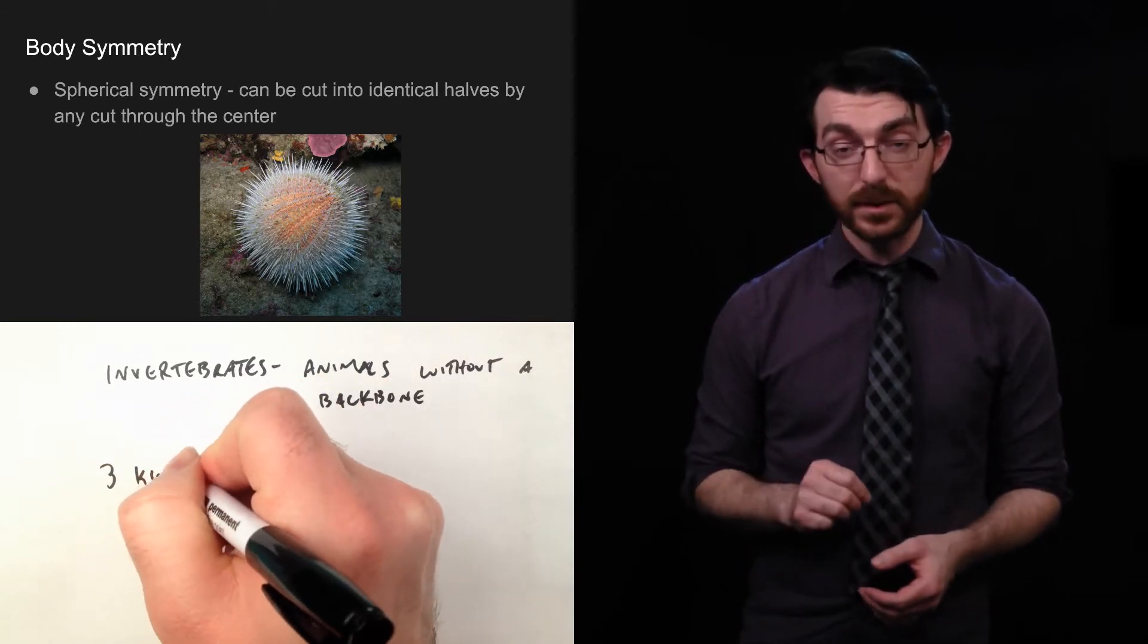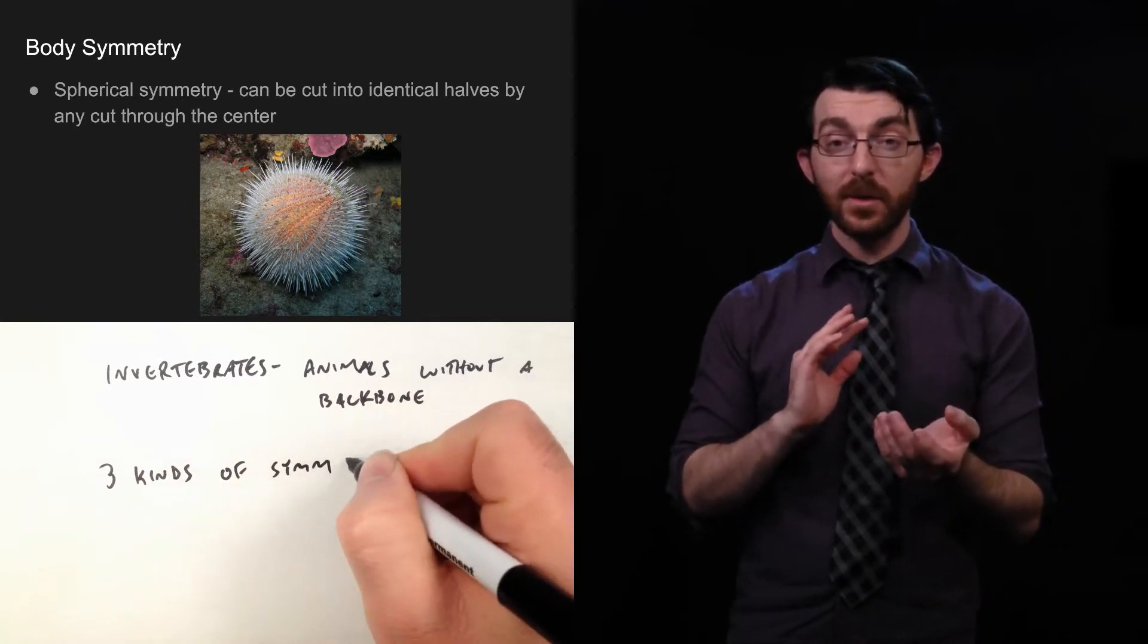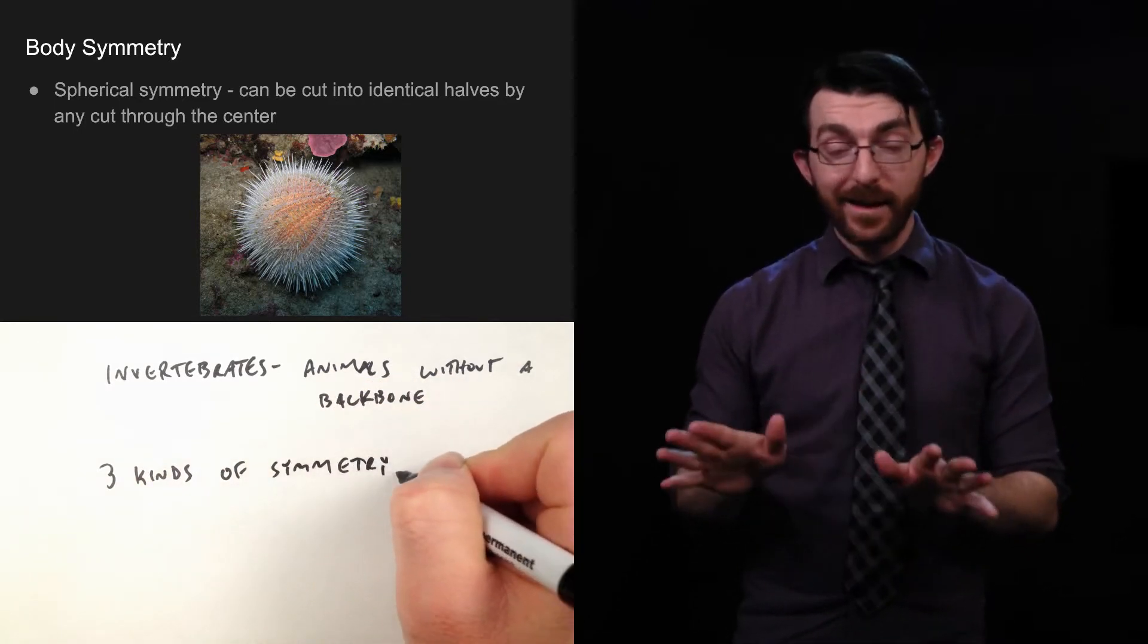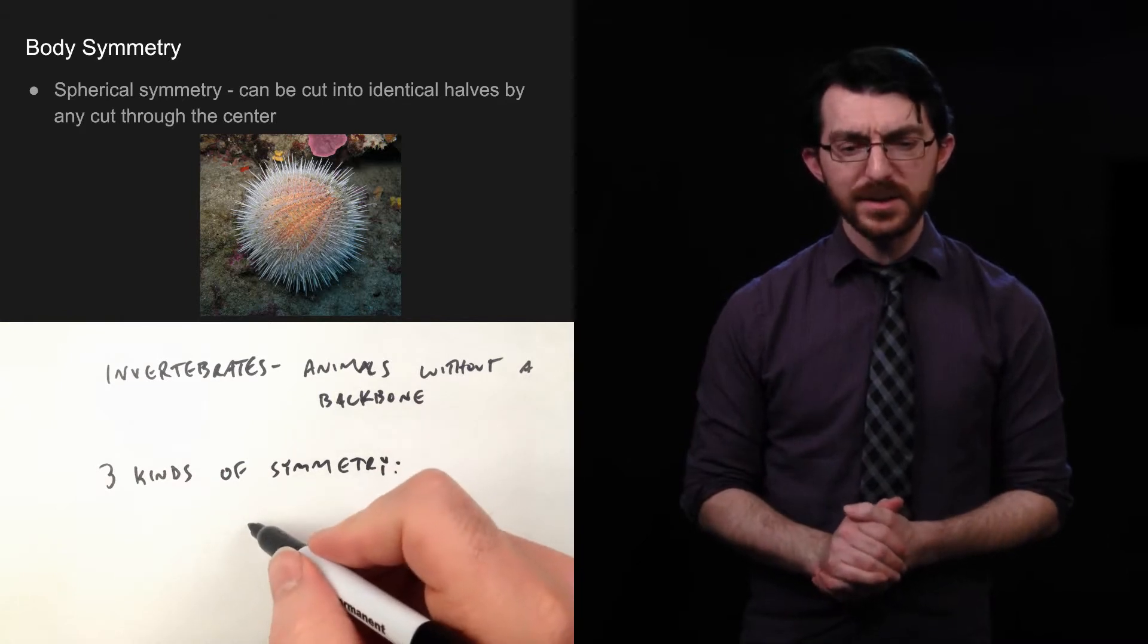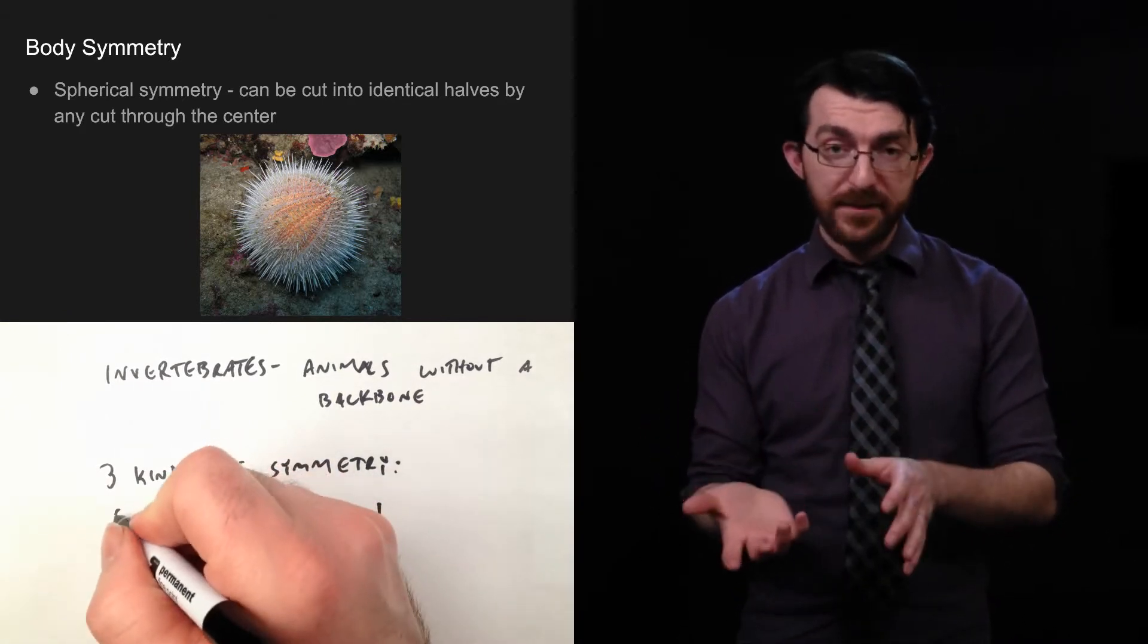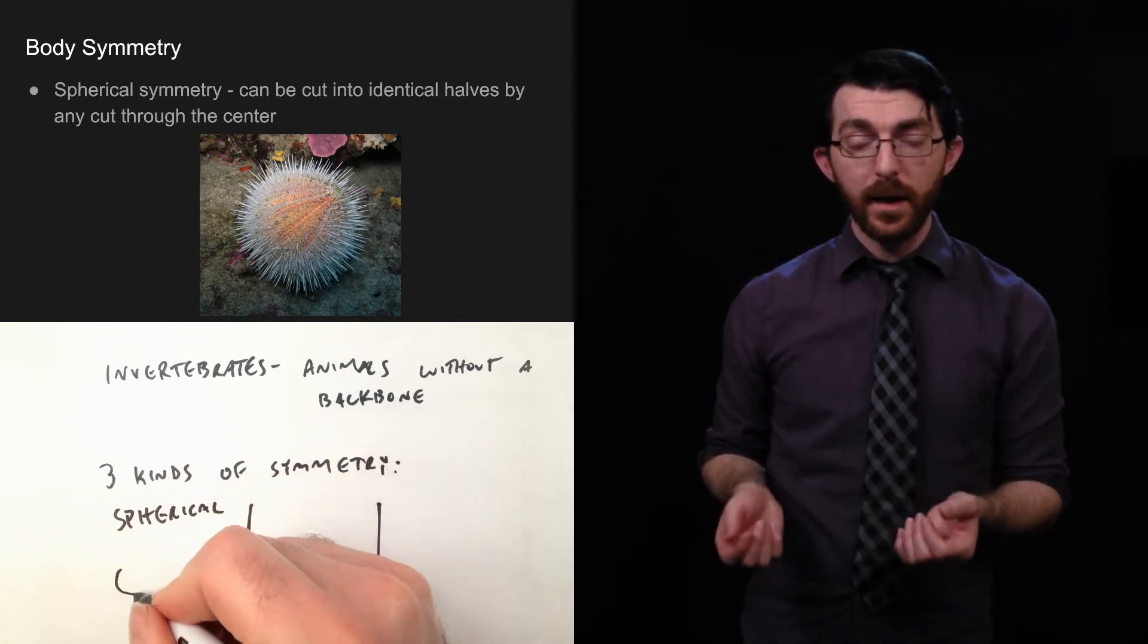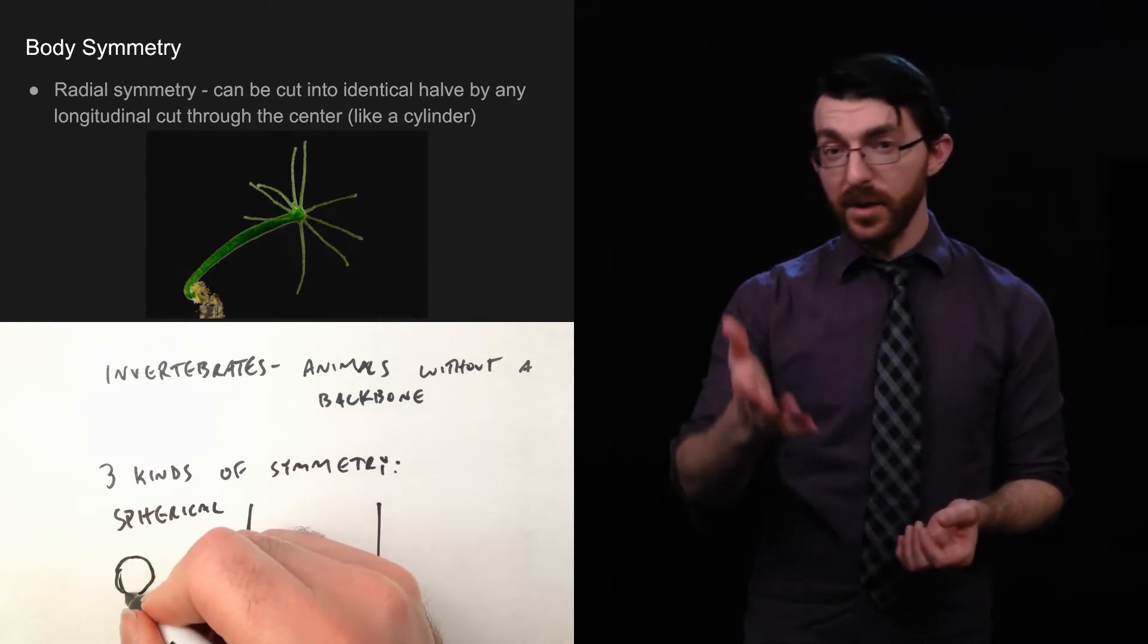The first kind is spherical symmetry. Spherical symmetry is when a body can be cut into identical halves by any cut through the center. So just take like a ball or something. No matter how you turn or rotate that ball, if you cut through the center, you'll have two identical hemispheres.